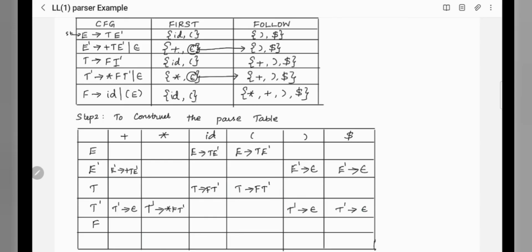For F, FIRST(F) is id and open brackets. So F tends to id goes in the id column, and F tends to open bracket E close bracket goes in the open brackets column. With this, we have completely filled the parse table.